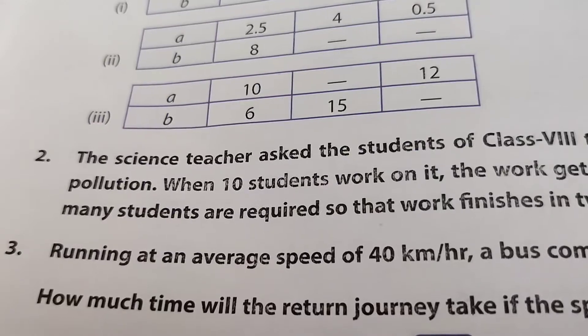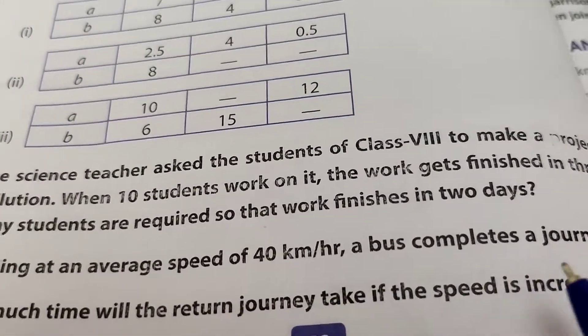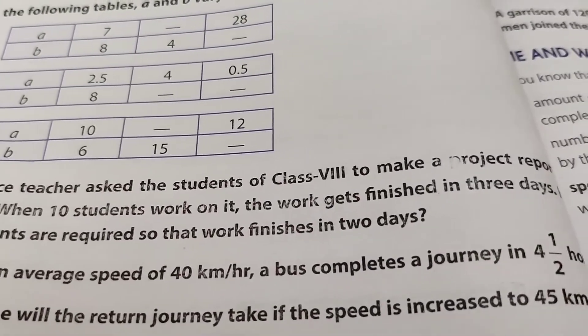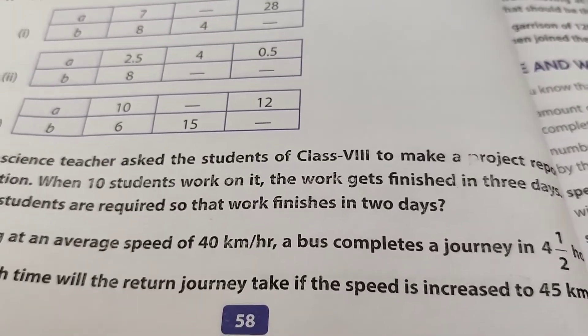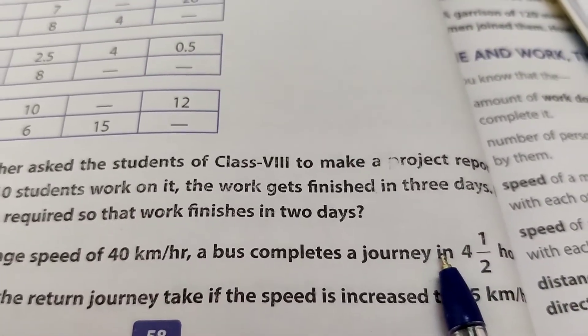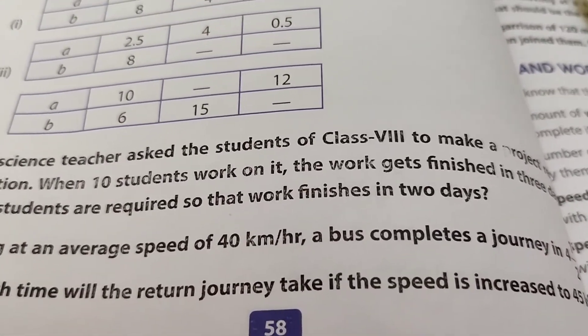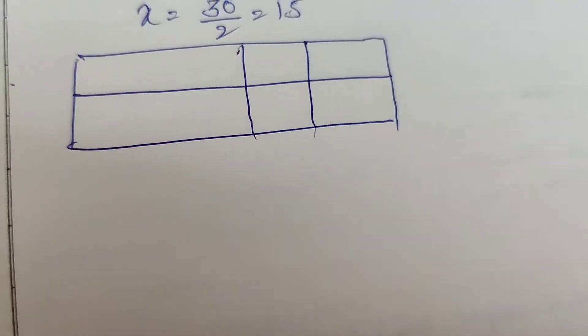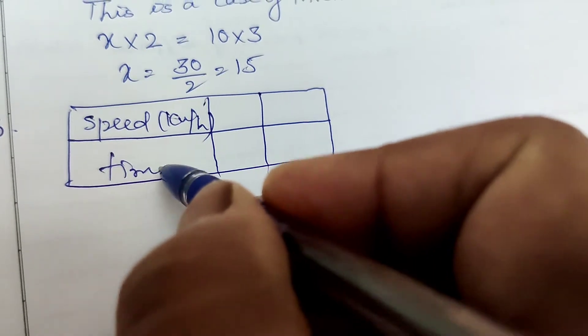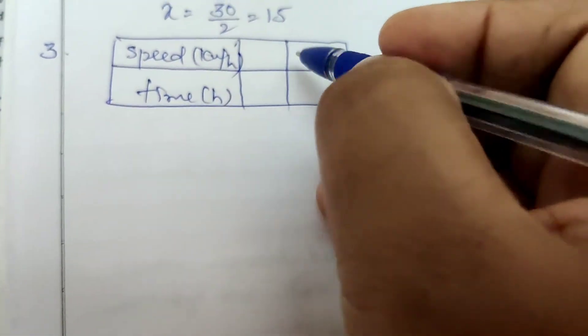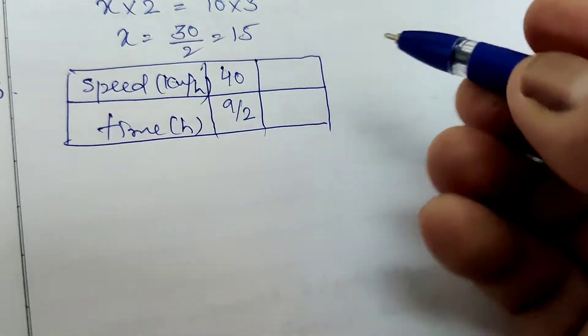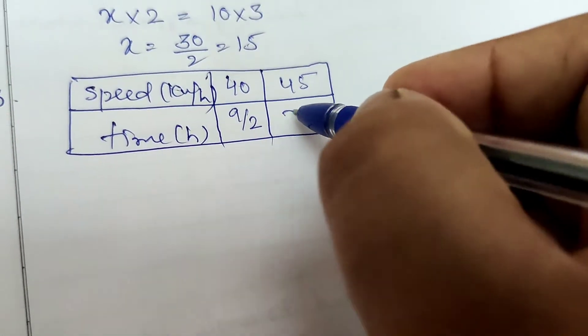Question 3: Running at an average speed of 40 km per hour, a bus completes a journey in 4 and a half hours (i.e., 9/2 hours). How much time will the return journey take if the speed is increased to 45 km per hour? As speed increases, time decreases — this is clearly a case of inverse variation.